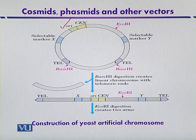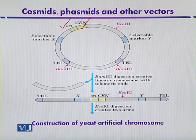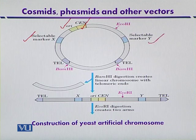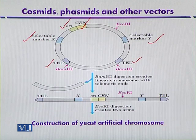The YAC also contains a region for the centromere so that it can separate during mitotic division. It contains selectable markers — selectable marker 1, X, or Y — that may indicate resistance to any antibiotic or any other selectable marker. Telomeric DNA is also present, and within this telomeric DNA, BamHI restriction sites are located.